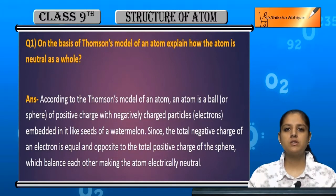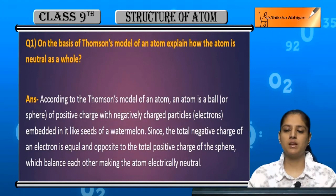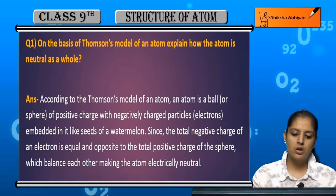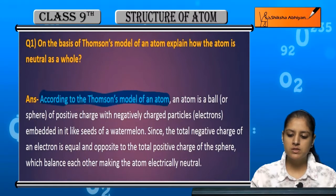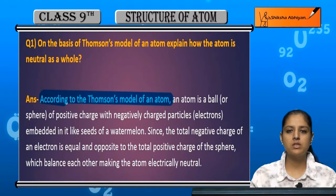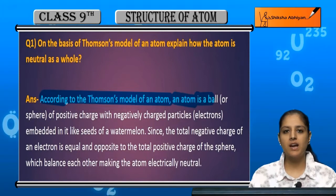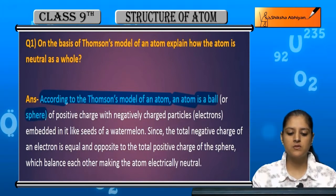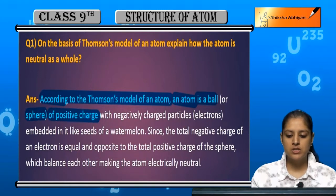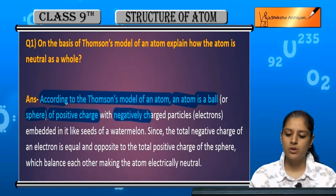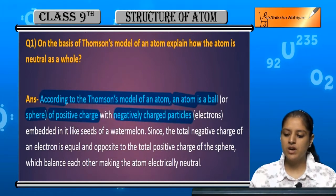Okay, Thomson's model of an atom said that an atom is a ball or sphere which has a positive charge, a ball-like atom, and the negatively charged